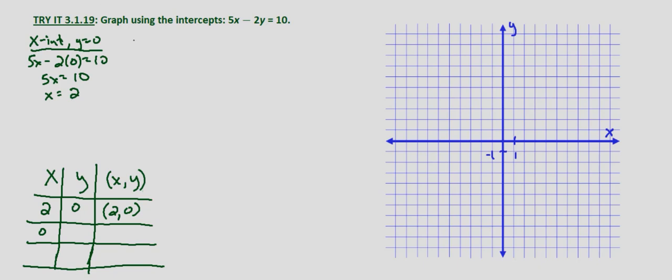For our y-intercept, again that's when x equals zero. So we substitute x equals zero. 5 times zero minus 2y equals 10. That gives us negative 2y equals 10. Divide both sides by negative 2, and we get y equals negative 5. So our y-intercept is 0, negative 5.